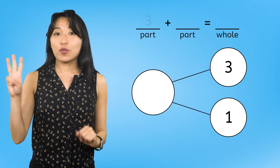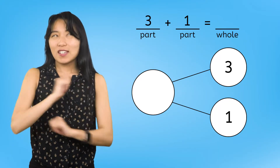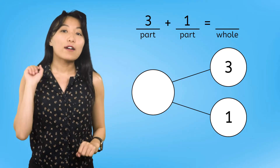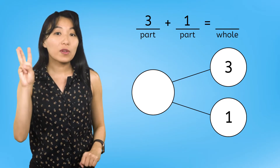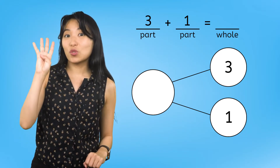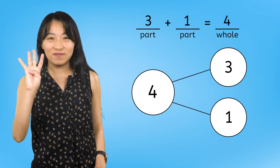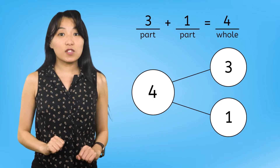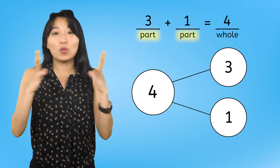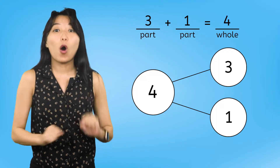So, three plus one equals... I'm going to use my fingers to find the answer. I have one, two, three, plus one more equals one, two, three, four. Our whole is four. Addition sentences follow a pattern: part plus part equals whole. We can use addition to compose numbers.